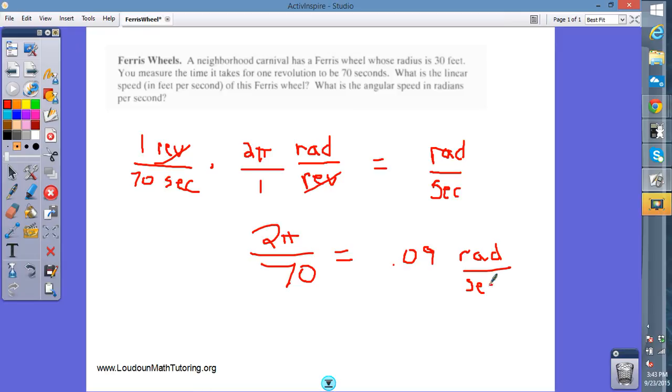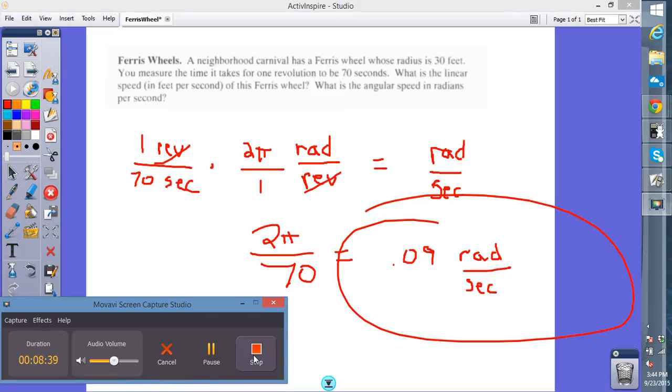So this is the speed this ferris wheel is spinning around. It's spinning around 0.09 radians per second. When you talk about the unit circle you will be able to convert radians to degrees. We won't do that here but we could also find out how many degrees per second the ferris wheel is spinning around. I hope this helps. Good luck with your pre-calc.